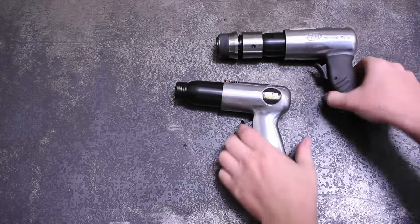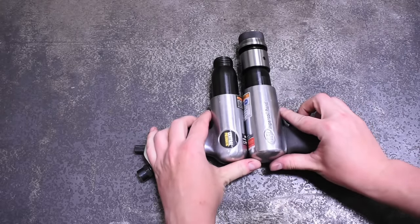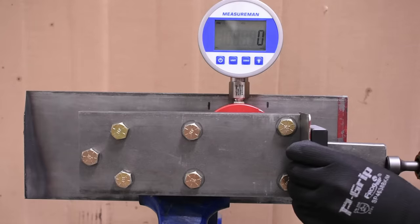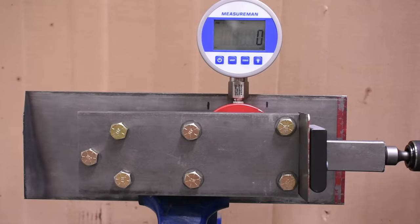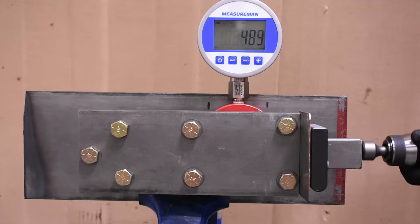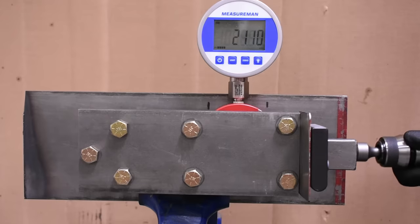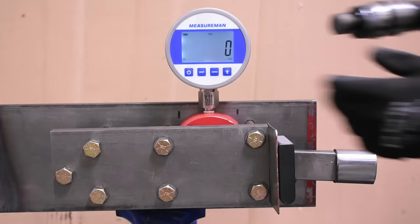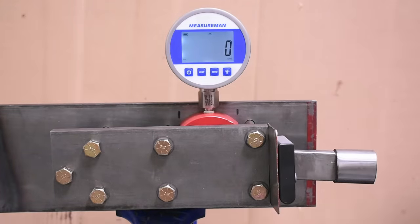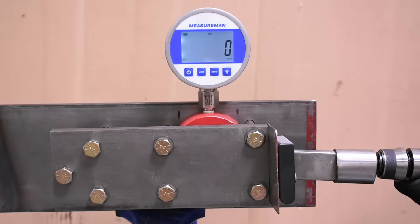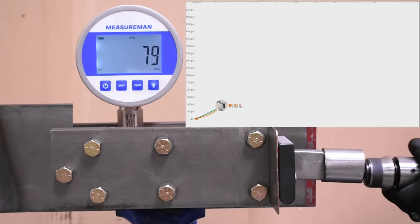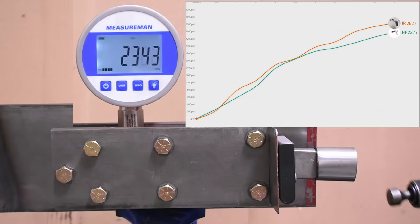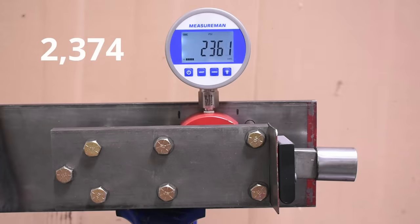Our first test is max power. This is five seconds at 90 PSI running in the tool with the trigger pulled. Up first is Ingersoll Rand, and here's the Harbor Freight. So the Harbor Freight finished 10% down here.